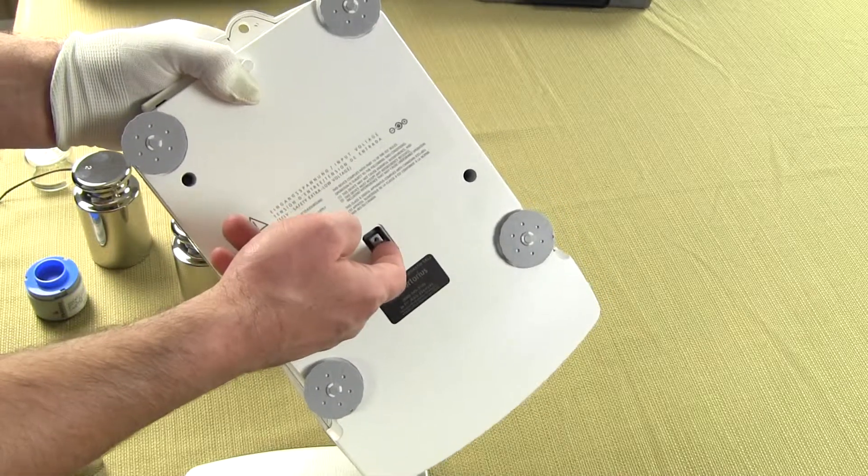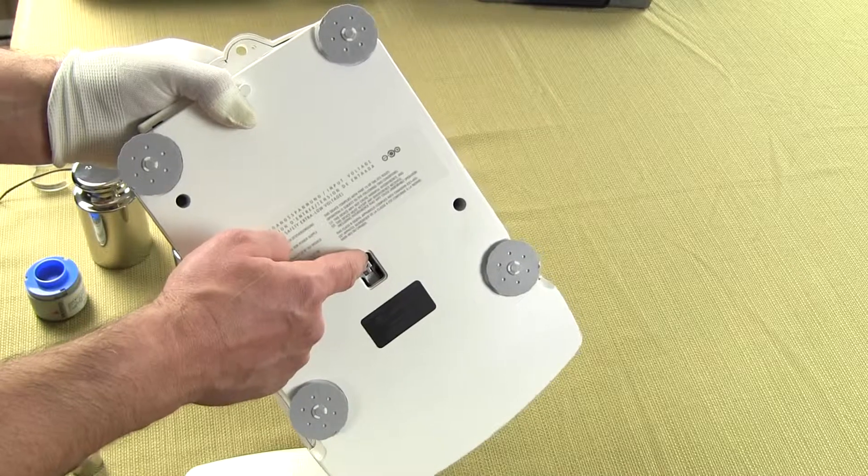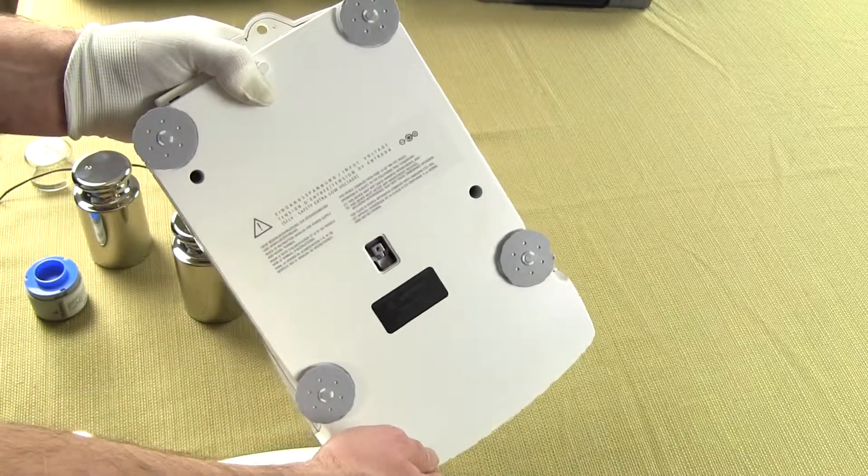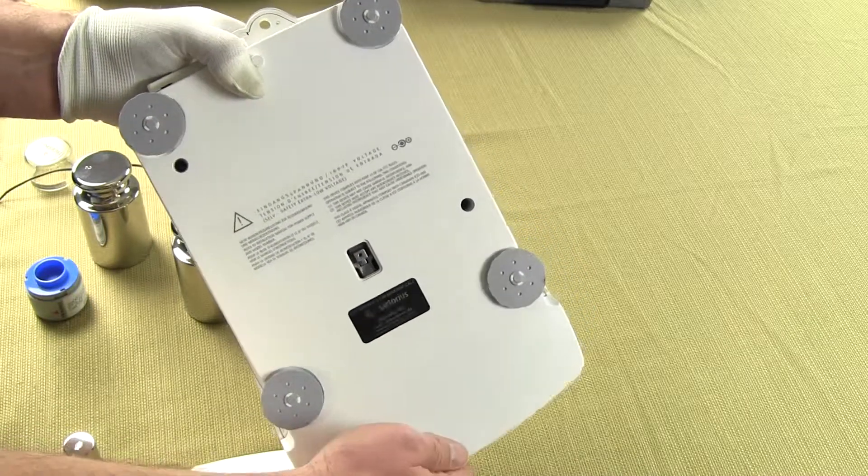So you could hang a wire on this side or there's an optional hook. It's about a three millimeter bolt here. Sartorius does have an option that you can buy the hanger or you can put the wire right on this side. So this balance has an underhook.